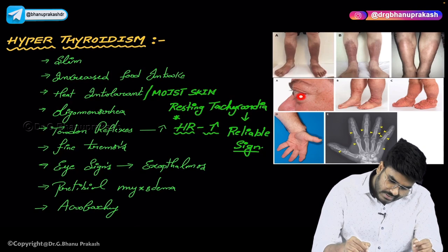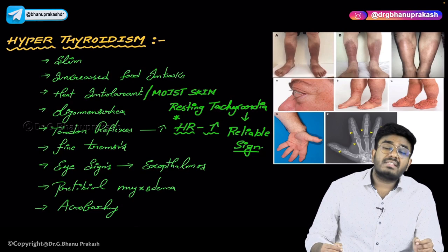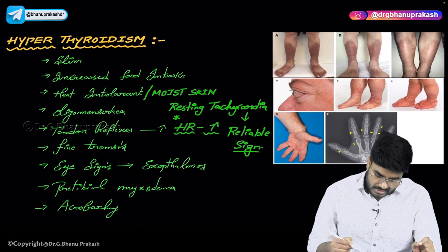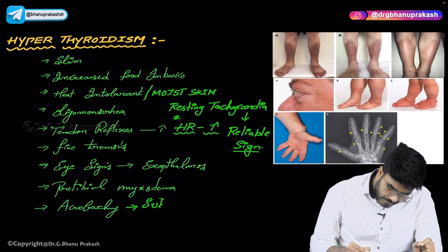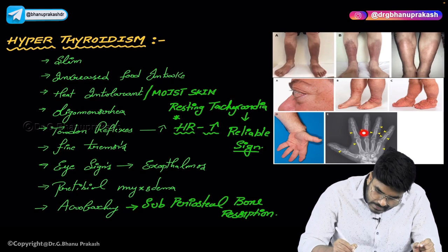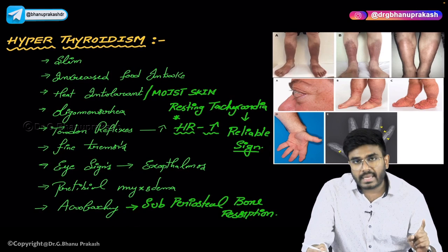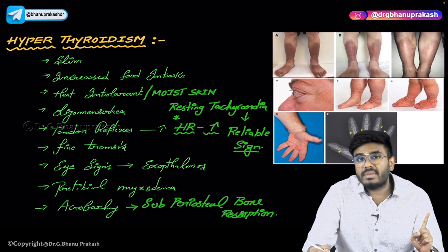The person's eyes are protruding or bulging out — this is exophthalmos. Because of excessive T3/T4, subperiosteal bone resorption will also occur, called acropachy — a form of bone resorption visible on X-ray. This is another clinical feature associated with hyperthyroidism. The most reliable sign of hyperthyroidism is resting tachycardia, and pre-tibial myxedema and acropachy should not be forgotten.